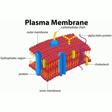The Plasma Membrane is the outer layer of the cell and it is also called the selectively permeable membrane. The reason it is known as a selectively permeable membrane is because it permits only selective particles to enter inside the cell.